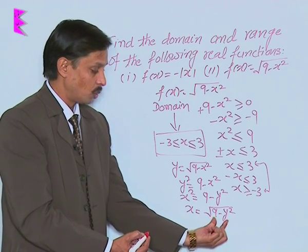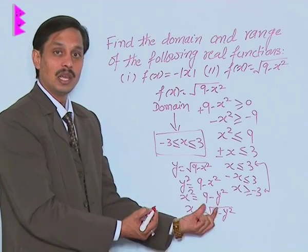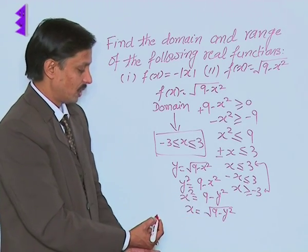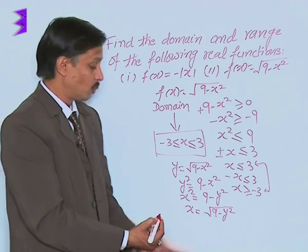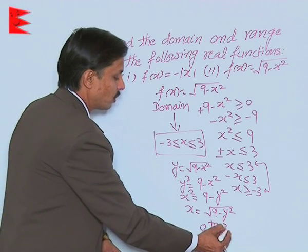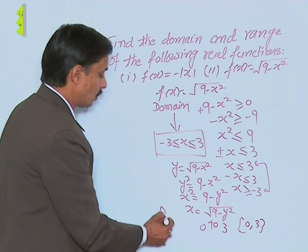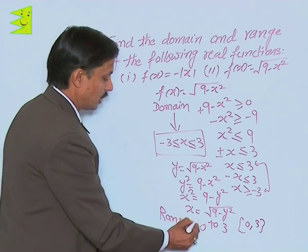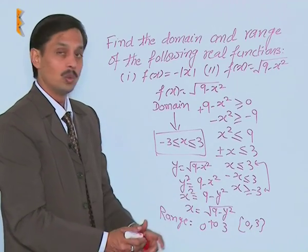This value is in the root, so this cannot be less than zero at all. So the set of possible values is from 0 to 3, that is 0 comma 3. So the range of the question is possible values of y from 0 to 3.